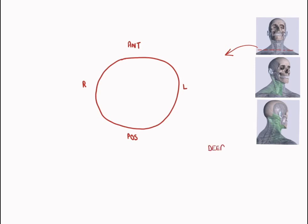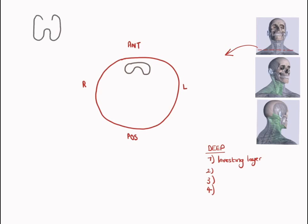So the deep cervical fascial layers — there are four of those — and the first being the investing layer, which I've just drawn in red. Now, what sort of things have we got running through the neck? Most anteriorly, certainly at this level, we have the thyroid gland. The thyroid gland, if looking at it directly front on, is H-shaped. So it has a central isthmus and two lateral lobes either side.